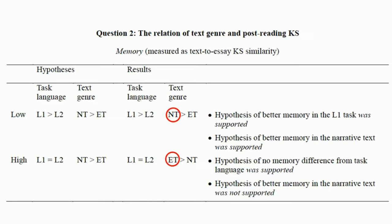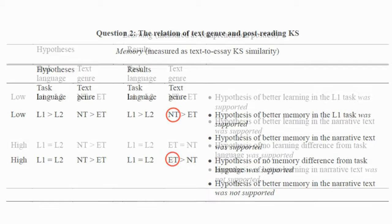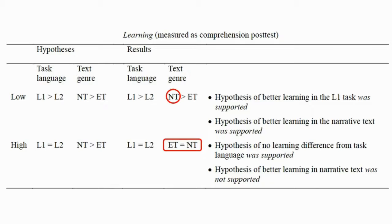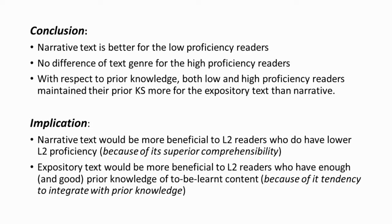This unexpected finding can be explained by their prior knowledge structure. The topic — the circulatory system — is typically studied in school textbooks in an expository format. So these participants probably had a pre-existing, expository-like knowledge structure, which may have been activated when reading the expository text. But their expository-like knowledge structure may have competed with the narrative text when reading it, leading to weaker narrative-to-summary essay similarity. Regarding learning measured as comprehension post-test score, low-proficiency readers had better post-test scores for the narrative text because it is easier to understand, while high-proficiency readers showed no difference in comprehension score.